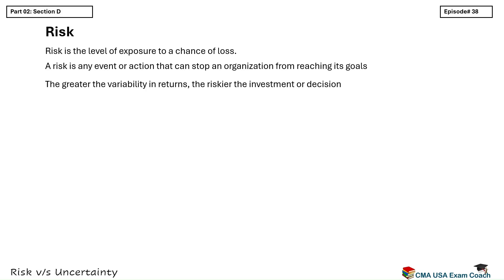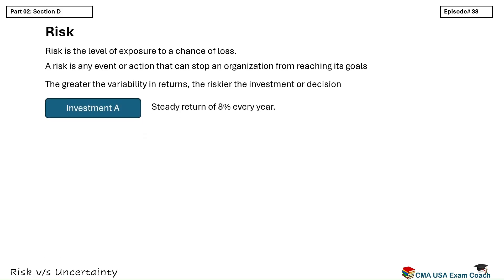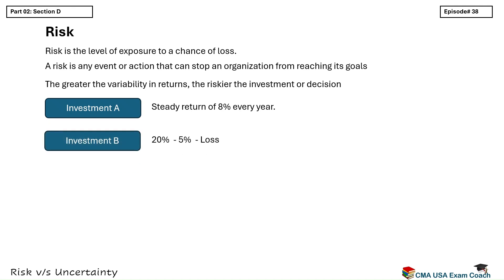Let's take a quick example. Imagine you are deciding between two investment options. Option A gives you a steady return of 8% every year. Option B sometimes gives you 20%, sometimes 5%, and sometimes even a loss. Which one is riskier? Option B, because the returns are more variable — you don't know what to expect, so the uncertainty is higher. So remember, risk is not just about loss. It's about how uncertain the outcome is. In finance, we measure risk by how much the return can vary.